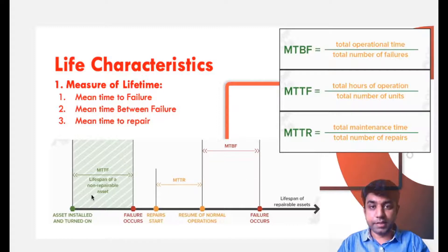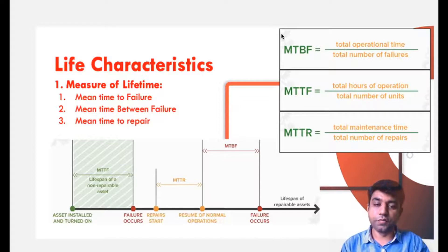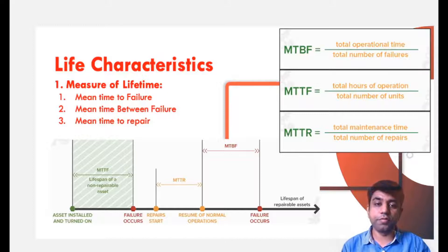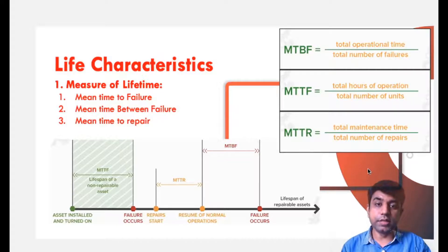So this is the fundamental definition. Mathematically, mean time between failure can be calculated as total operational time divided by total number of failures. Mean time to failure can be evaluated if you know the total hours of operation and the total number of units or products or machines. Mean time to repair is the ratio of total maintenance time divided by total number of repairs. These are the three terms related to the measurement of lifetime.